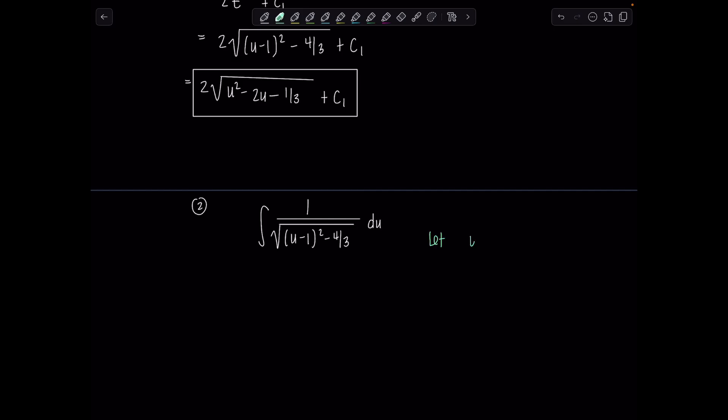Some people like to do another substitution before they do the trig sub. I'm comfortable just going for it. Just let that entire variable quantity, in this case u minus 1, be the square root of that constant. So that would be 2 over rad 3 secant theta. A little gross, but it's okay. So differentiating both sides, du would be 2 over rad 3 secant theta tan theta d theta.